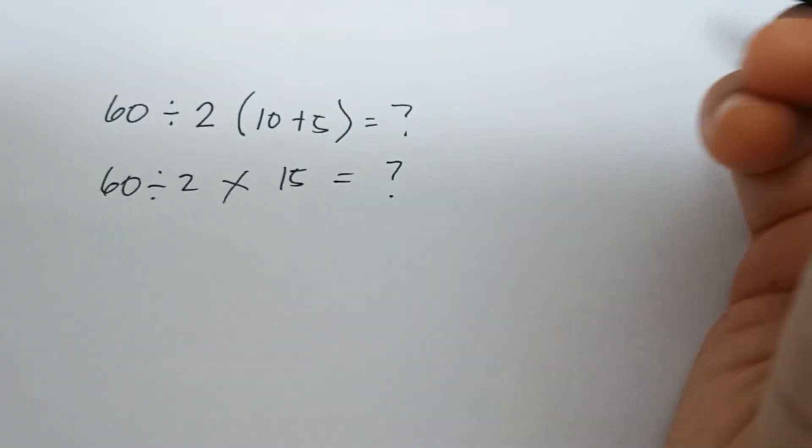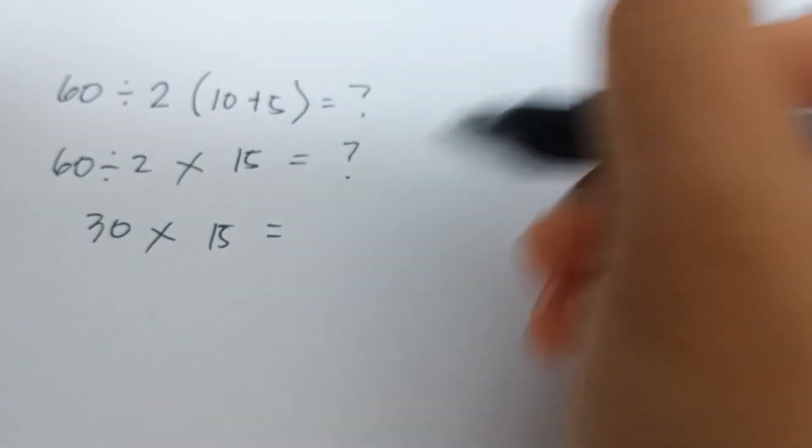5 equals 15, then the equation will become 60 divide 2 times 15 equals what. So 60 divide 2 equals